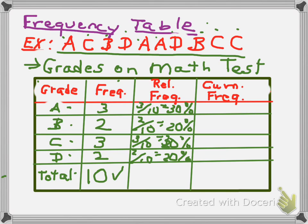Next, I filled in the relative frequency column. So we want relative to the total number, which is 10. So it's 3 divided by 10, which is 30%. For A, 30%, 20% for B, 30% for C, 20% for D. So our total should add up to 100%, which it does.